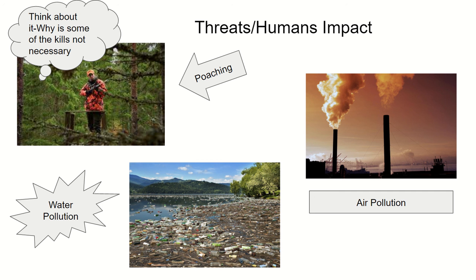A few other threats: overfishing, when humans fish too much; infrastructure, when humans build civilizations on natural habitats; and invasive species and wildlife trade, when humans — sometimes by mistake — release non-native species into the wild and trade living or dead species to different places of the planet. This can harm native wildlife. All of these threats endanger our planet, and sometimes threats we create can affect us too. Air pollution can harm our health and make the climate warmer — this is called climate change.